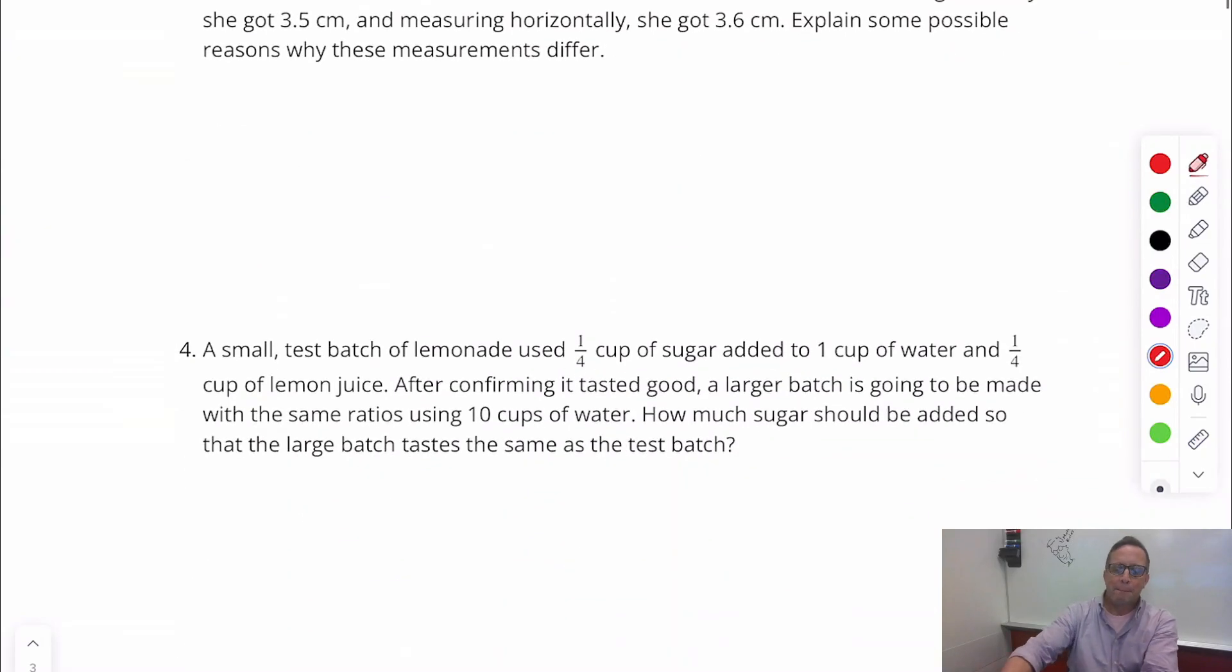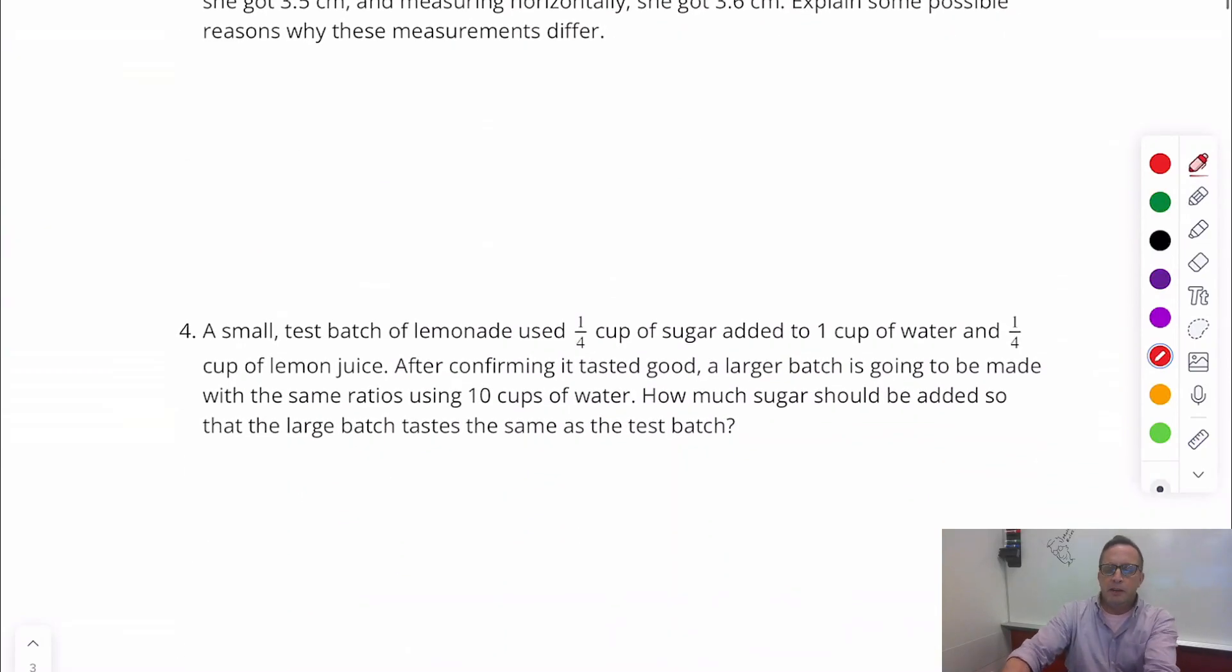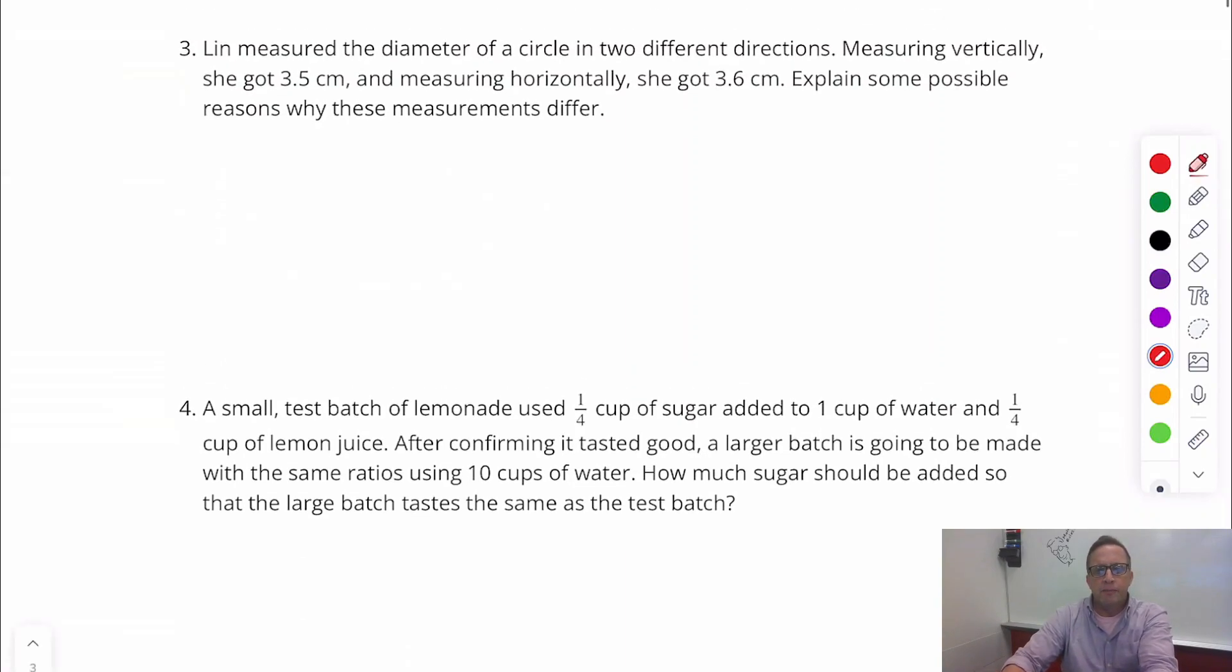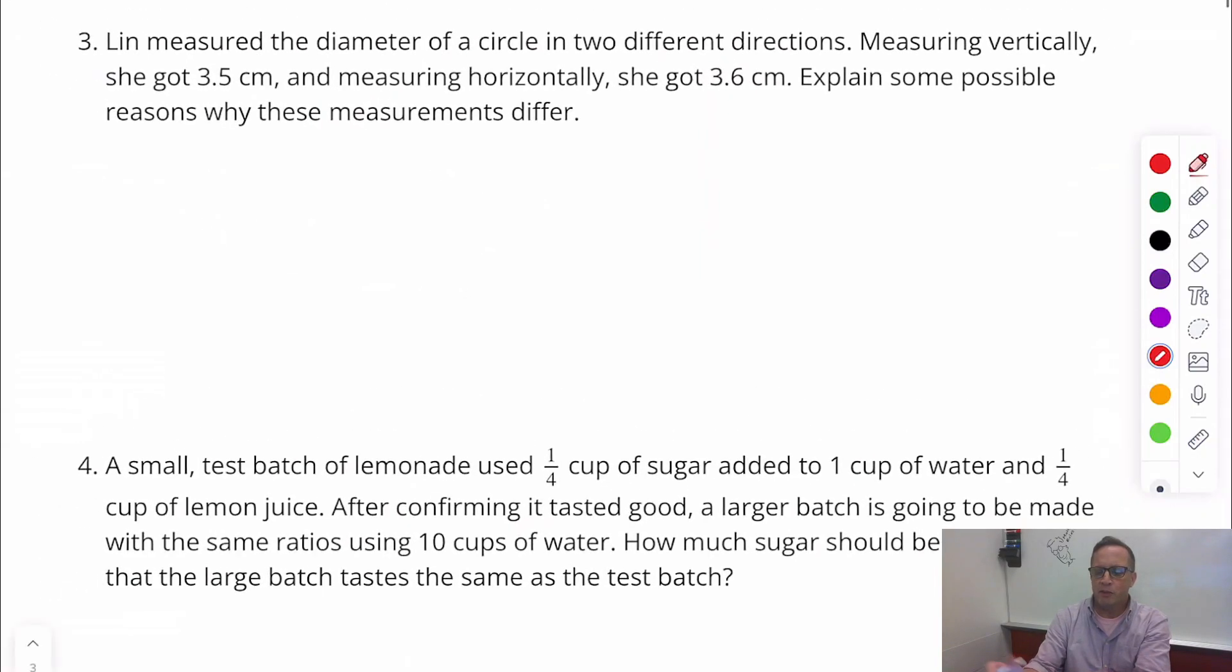Alright. For number three. Lynn measured the diameter of a circle in two different sections, measuring vertically. She got 3.5 centimeters when she measured vertically, and measuring horizontally, she got 3.6. So that's weird. Explain some possible reasons why these measurements differ. Well, probably because Lynn is a human being. That's probably what happened. She's a human being. She can make errors, human errors. That happens.